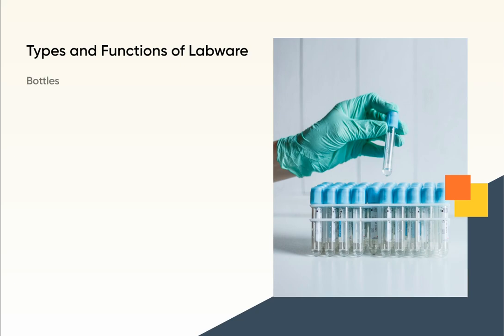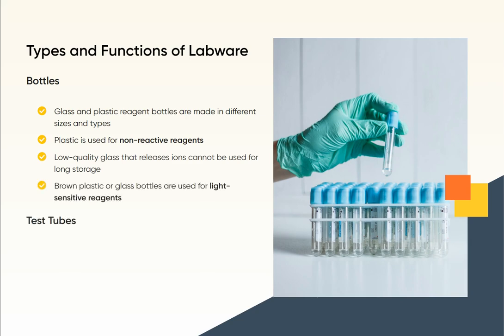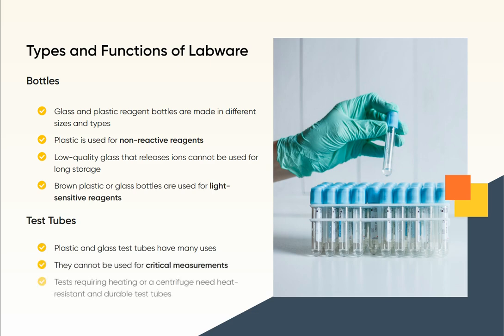Glass and plastic reagent bottles are made in different sizes and types. Plastic is used for non-reactive reagents. Low quality glass that releases ions cannot be used for long storage. Brown plastic or glass bottles are used for light-sensitive reagents.